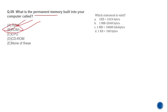MCQ 10: Which statement is valid? Option A: 1 KB = 1024 bytes — this is correct. Option B: 1 MB = 2448 bytes — this is wrong, 1 MB is much larger. Option C: 1 MB = 10,000 KB — wrong, it should be 1024 KB. Option D: 1 KB = 100 bytes — wrong. The correct answer is A: 1 KB equals 1024 bytes.